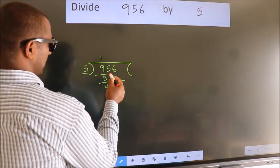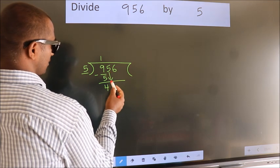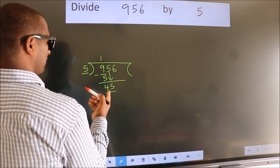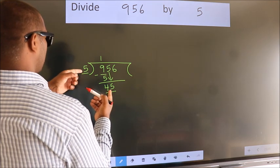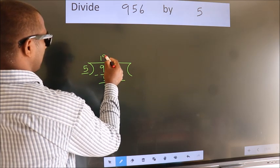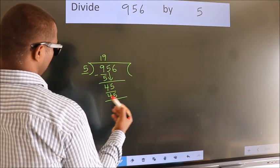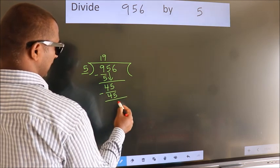After this, bring down the next number. So, 5 down. So, 45. When do we get 45 in the 5 times table? 5 nines, 45. Now we subtract. We get 0.